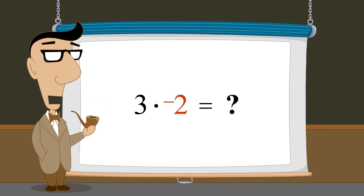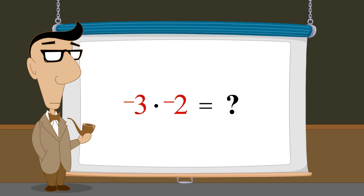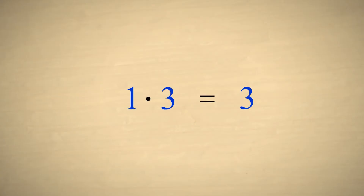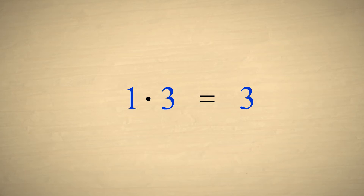With the invention of negative numbers, the rules of multiplication had to be expanded to allow the operands to be either positive or negative. The rules of multiplication were picked so as to keep everything consistent. For instance, since 1 is the multiplicative identity, if a number is multiplied by 1, we should expect that the number's value and sign will not change.